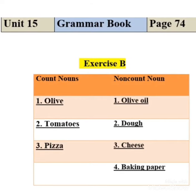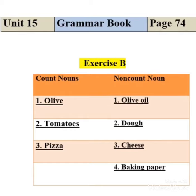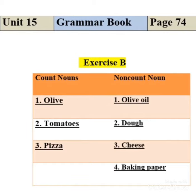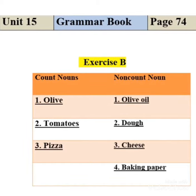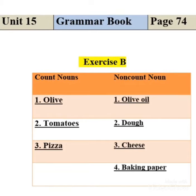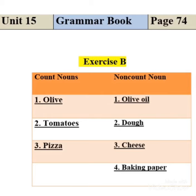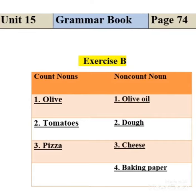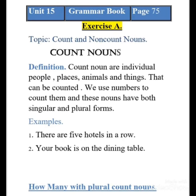On the same page, you may see Exercise B. There is a chart — one column is for count nouns and the other is for non-count nouns. Before doing the exercise, we must know what count nouns are. Count nouns are individual people, places, animals, and things that can be counted.